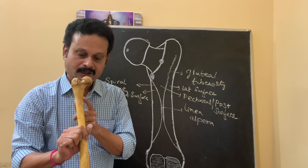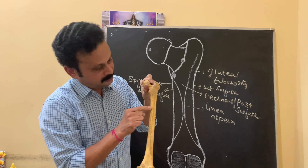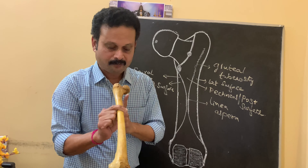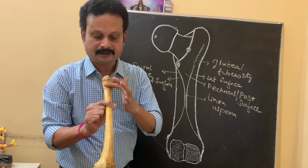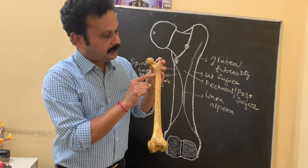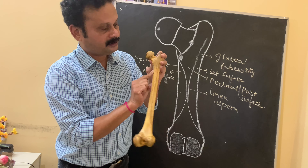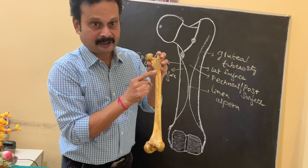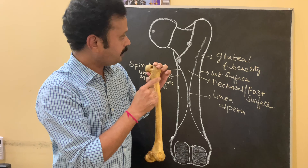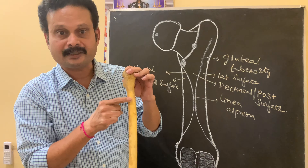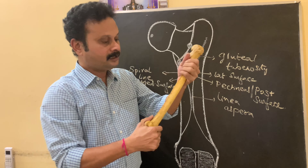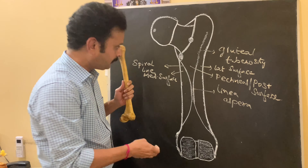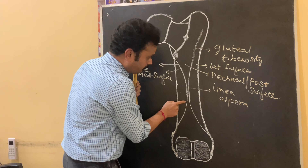So in the upper one third there are four borders and four surfaces. The four borders are medial border, lateral border, spiral line, and gluteal tuberosity. The four surfaces are: between medial and lateral border is the anterior surface; between medial border and spiral line is the medial surface; between spiral line and gluteal tuberosity is the pectineal surface; between gluteal tuberosity and lateral border is the lateral surface.